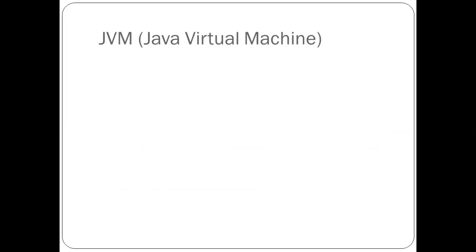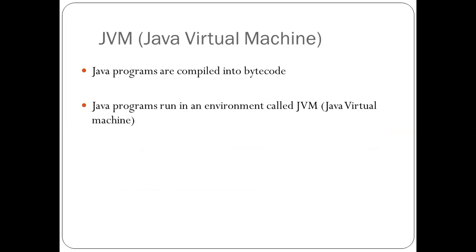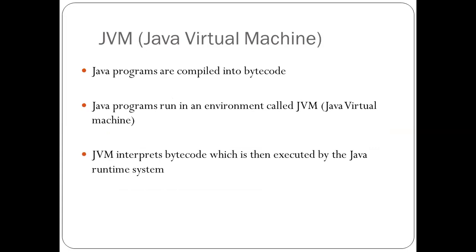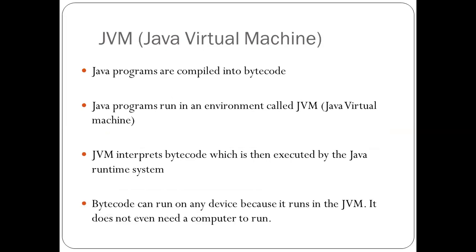Java programs are compiled into bytecode and run in an environment called the JVM — Java Virtual Machine. The JVM interprets bytecode, which is then executed by the Java Runtime Environment. Bytecode can run on any device because it runs in the JVM — it does not even need a computer to run. This is what we call the magic of Java, because it is bytecode that actually makes Java programs architecture and platform independent.